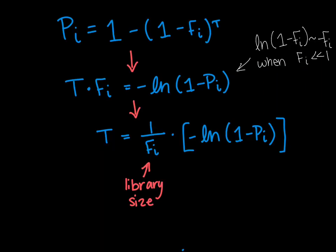We can rearrange this equation into a more useful form in the following manner: t times fi equals negative ln of 1 minus pi using the approximation ln of 1 minus fi is approximately negative fi which is true when fi is much less than 1. We can further rearrange by dividing by fi. 1 over fi is the library size and therefore the number of unique DNA sequences that we have.